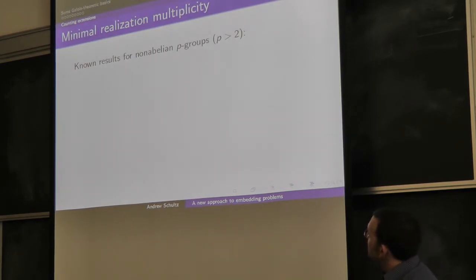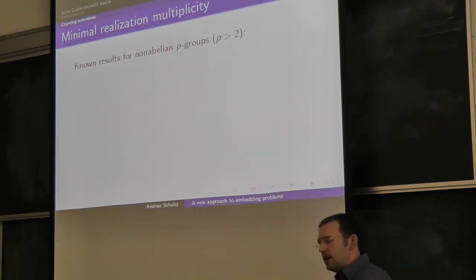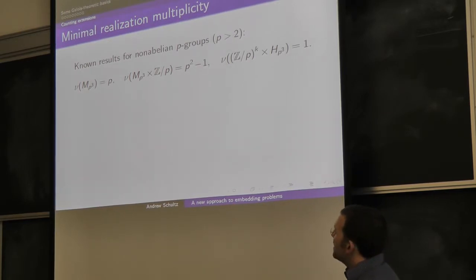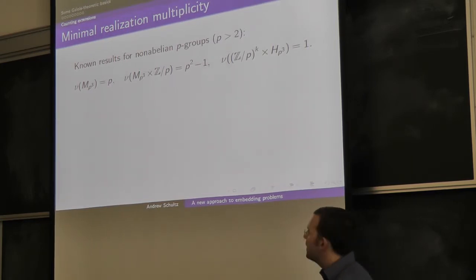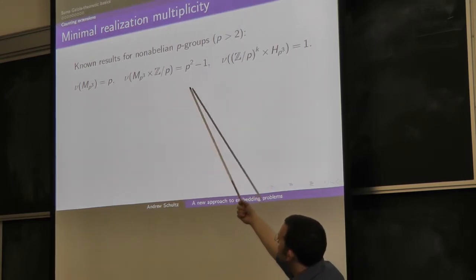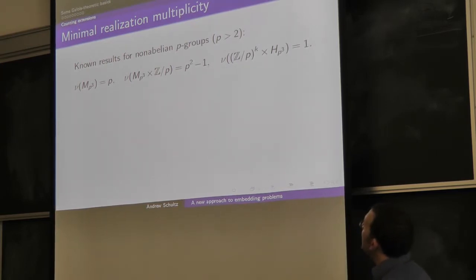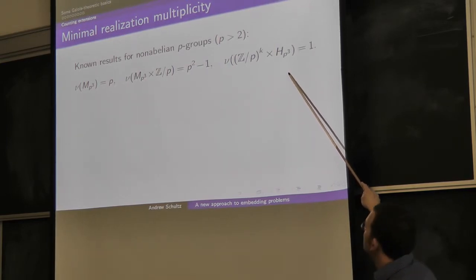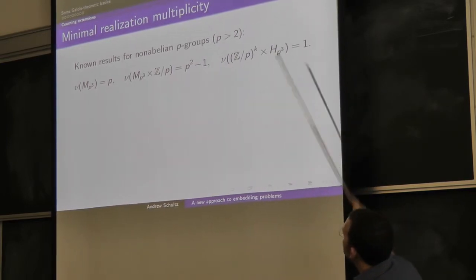How about some minimal realization multiplicity results? When p is bigger than 2, it turns out there is a field out there that has exactly p extensions whose group is MP cubed, and nothing smaller. For MP cubed cross Zp, there's one with exactly p squared minus 1. For HP cubed, there is a field with exactly one HP-cubed extension, so the realization multiplicity for HP cubed is exactly one.